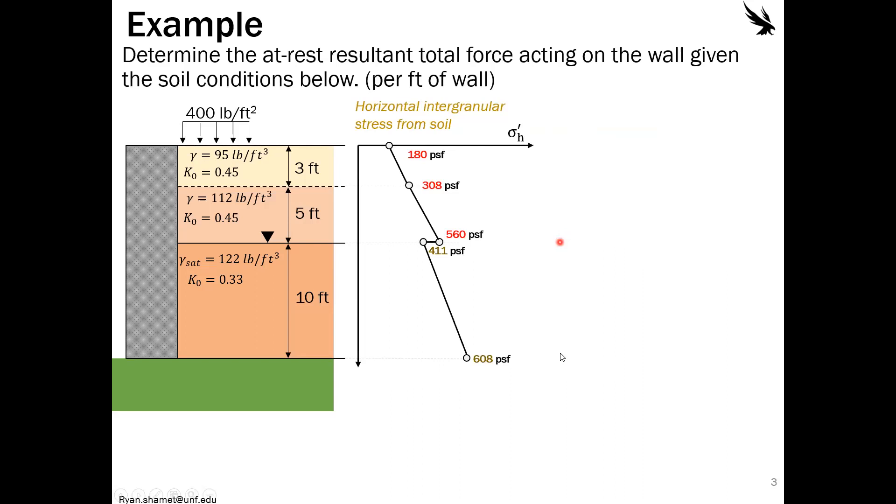But what we can't forget also is the pore water pressure or the pressure from the water acting on the wall. So the pressure from the water follows just a gradient, and that follows the unit weight of water, since the pressure in the vertical direction of water is the same in the horizontal direction. There's no intergranular activity, there's no arching, all that fun stuff. There's no reason to put a coefficient to change from vertical to effective stress.